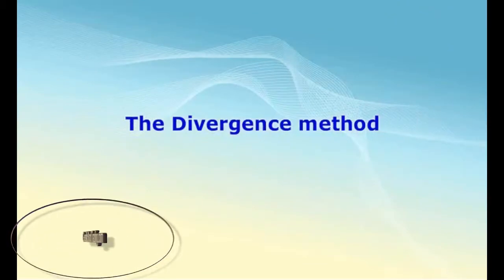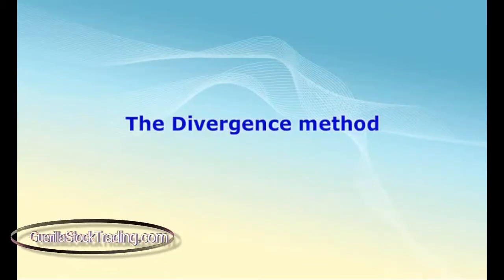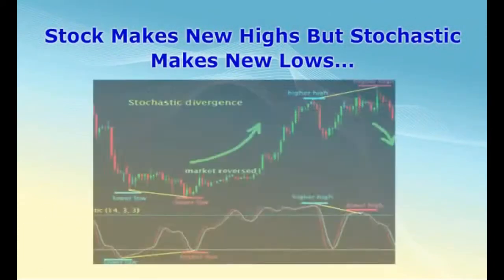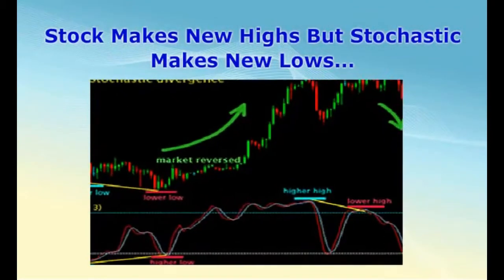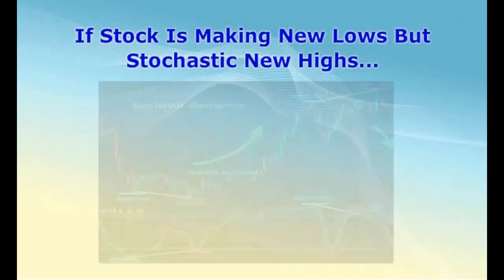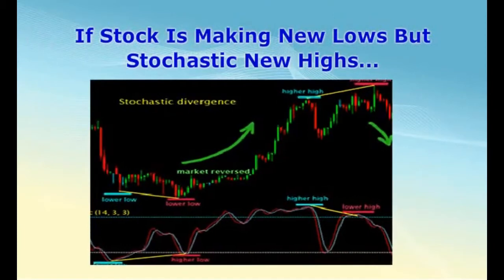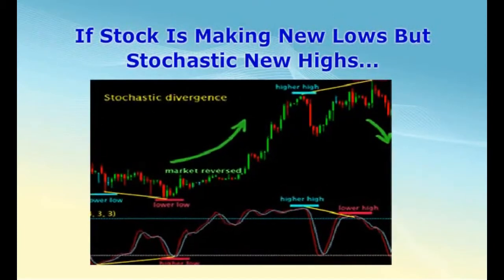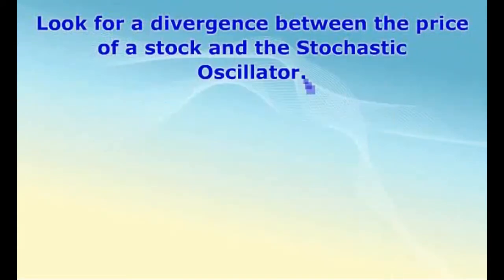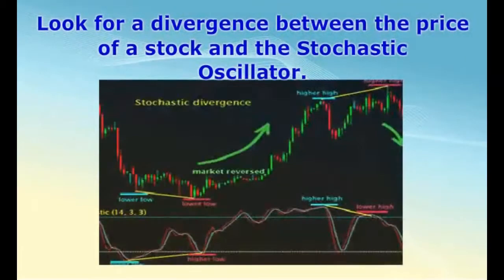The third most popular method of trading with a stochastic oscillator is called the divergence method. If the price of the stock is making new highs but the stochastic is making new lows, a negative divergence has taken place, and it means the price of the stock is likely to reverse. The goal of this strategy is to look for a divergence between the price of the stock and the stochastic oscillator.